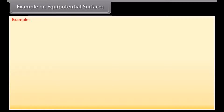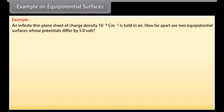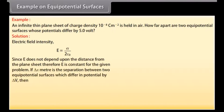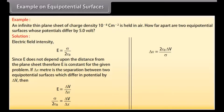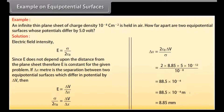Example on equipotential surfaces: An infinite thin plane sheet of charge density 10 raised to the power minus 8 coulomb per meter squared is held in air. How far apart are two equipotential surfaces whose potentials differ by 5V? The electric field intensity E equals sigma upon two epsilon naught. Since E does not depend upon the distance from the plane sheet, E is constant. If delta X is the separation between two equipotential surfaces differing in potential by delta V, then E equals delta V upon delta X. Evaluating, delta X equals two epsilon naught delta V divided by sigma, giving delta X equal to 8.85 millimeters.